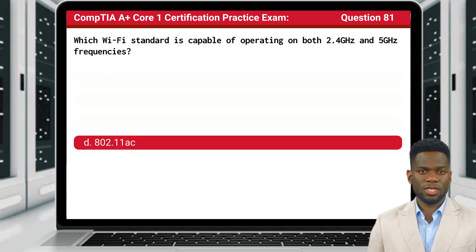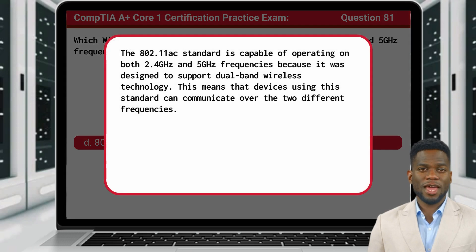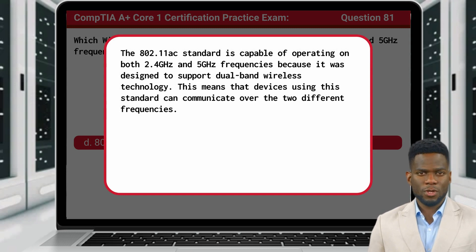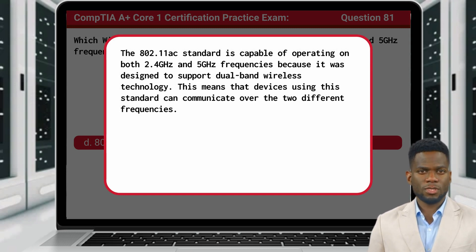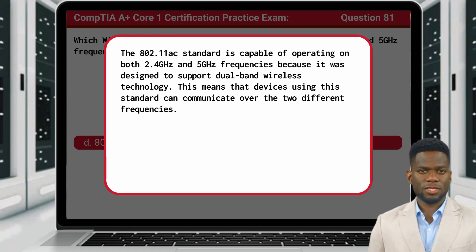Question 81. The answer is D, 802.11ac. The 802.11ac standard is capable of operating on both 2.4 GHz and 5 GHz frequencies because it was designed to support dual-band wireless technology. This means that devices using this standard can communicate over the two different frequencies.